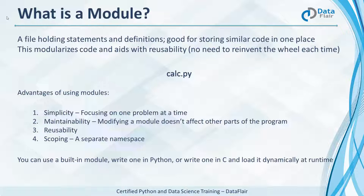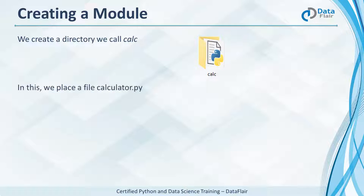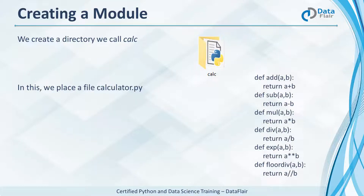Let's create our own module to get to know it better. Create a directory and name it calc — you can name it anything you want. Inside it, create a file and call it calculator.py. This is what it should hold for now.